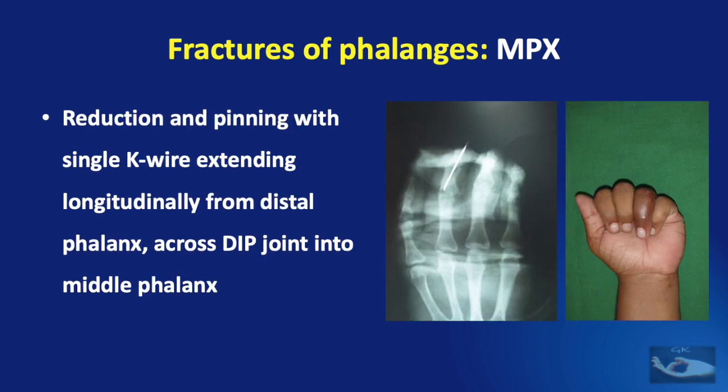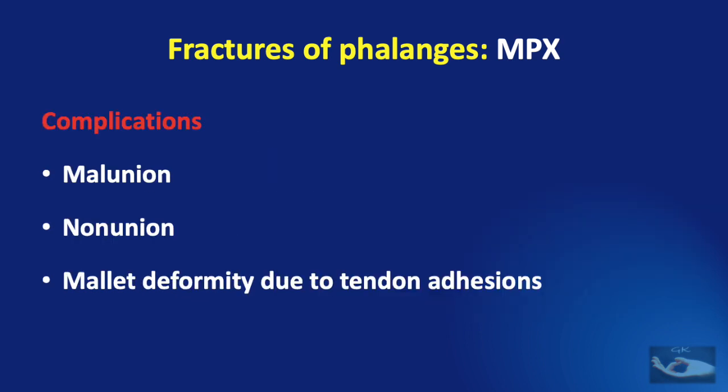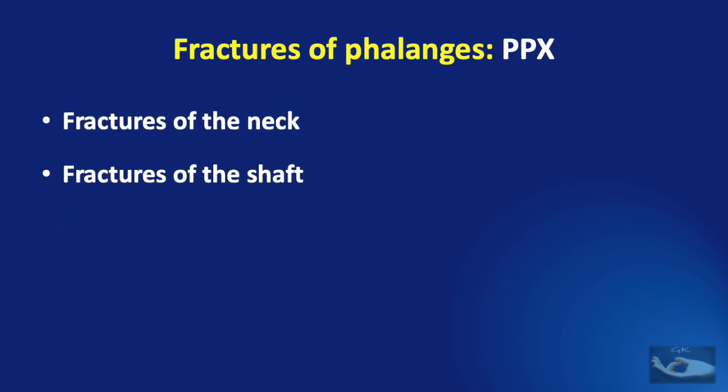Though we shall be giving more importance to the management of fractures of the proximal phalanx neck and shaft, fractures of the middle phalanx are also important. When the middle phalanx is fractured, it is usually a transverse fracture and the angulation is variable. Open reduction and fixation consists of reduction and pinning with a single K-wire extending longitudinally from the distal phalanx across the distal interphalangeal joint into the middle phalanx, fixing the fracture. Internal fixation is ideal to avoid malunion, nonunion and mallet deformity due to tendon adhesions.